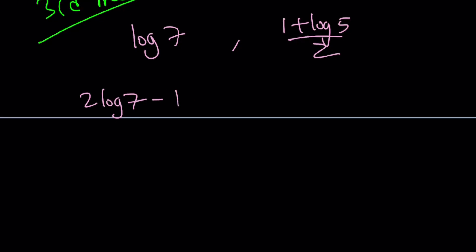So 2 log 7 minus 1. I want to work this out. Well, this can be written as log 7 squared minus 1, which is log 49 minus 1. But 1 can be written as log 10. And then I can write this now as using the quotient rule, log 49 over 10. Remember, log x minus log y.